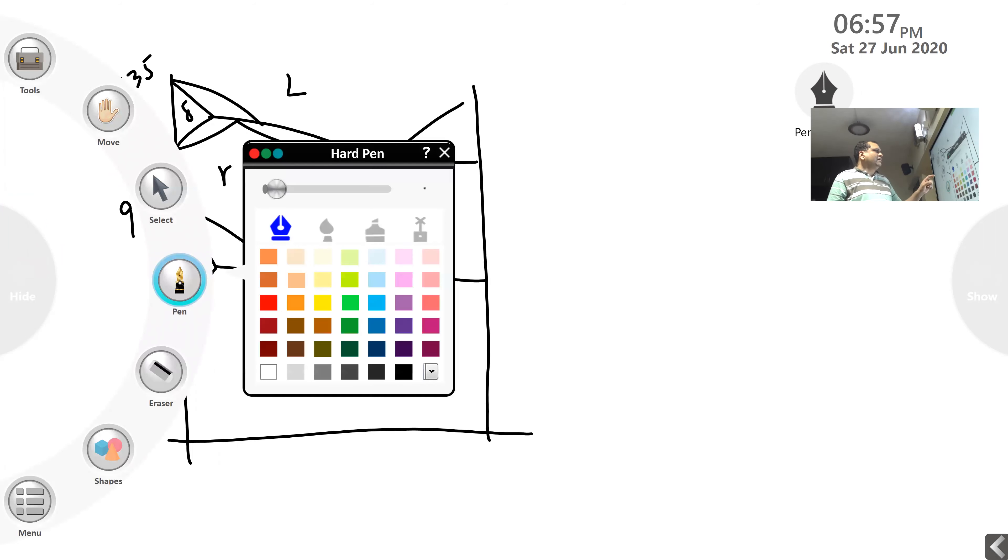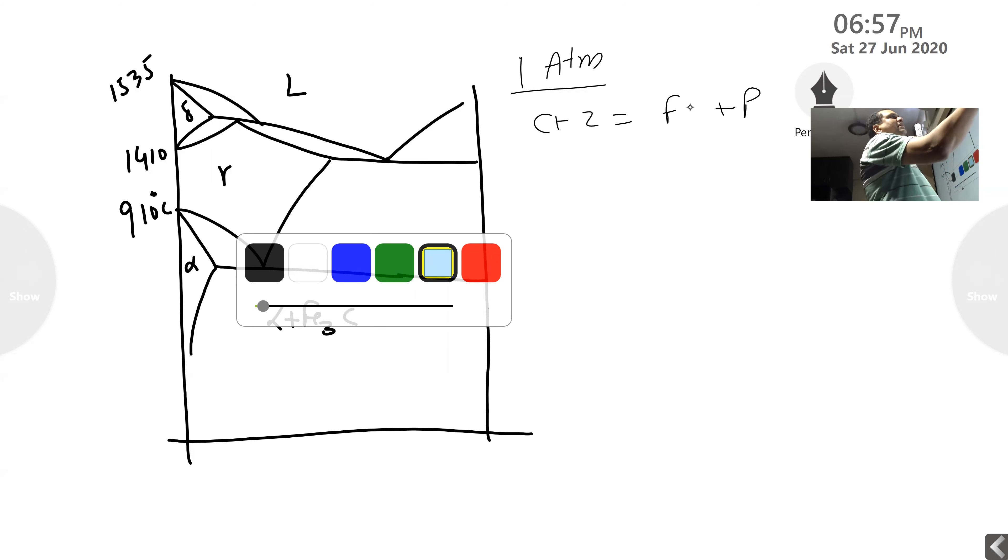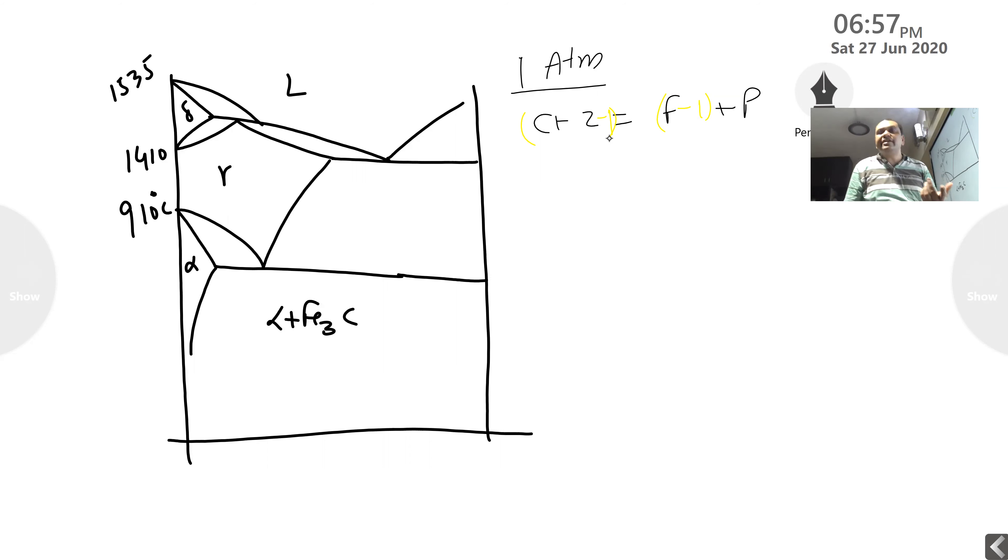So now if you can recall, I told you in the class that this diagram is constructed at one atmospheric pressure, means as on earth the pressure around is one atmosphere. So this diagram is constructed at one atmospheric pressure. Gibbs phase rule: C + 2 = F + P. Because we are restricting one degree of freedom, so we are restricting one degree of freedom. That is the reason I am subtracting one from both sides so that the equation is balanced.